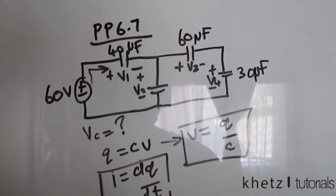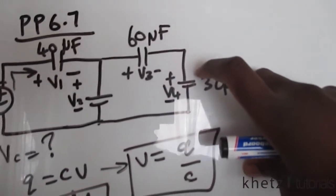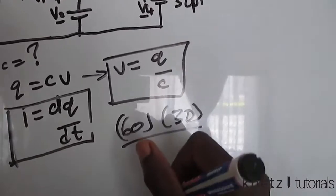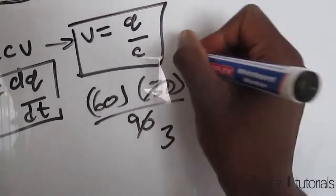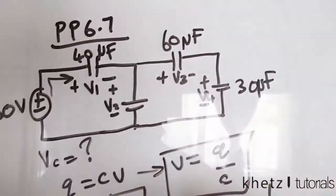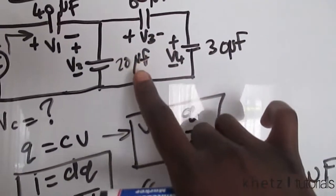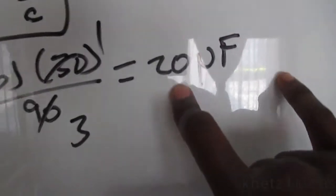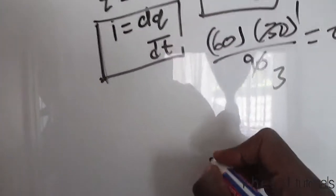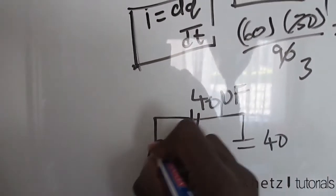Starting on this side, these two capacitors are in series, so we apply: 60 multiplied by 30, divided by 60 plus 30, which equals 90. Simplifying, that gives us 20 microfarads — the combination of those two. Here we also have 20 microfarads. This 20 microfarads is now in parallel with that combination of 20, and parallel capacitances add up, so 20 plus 20 equals 40 microfarads.